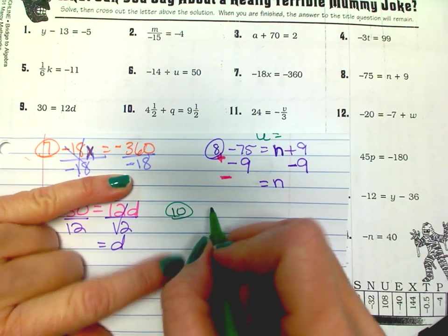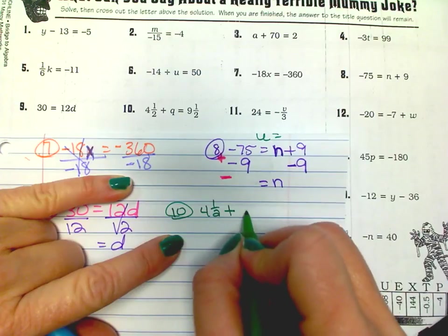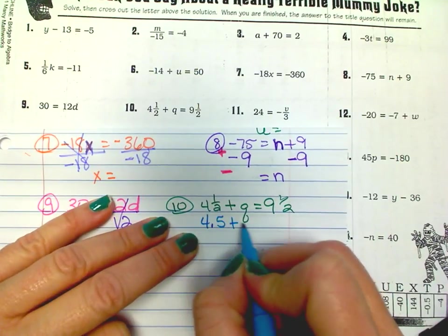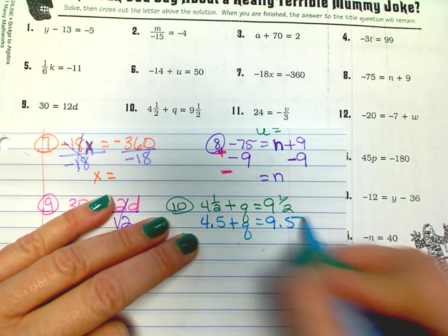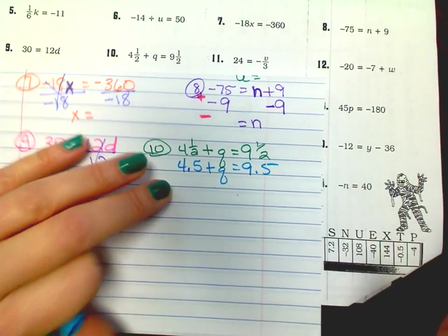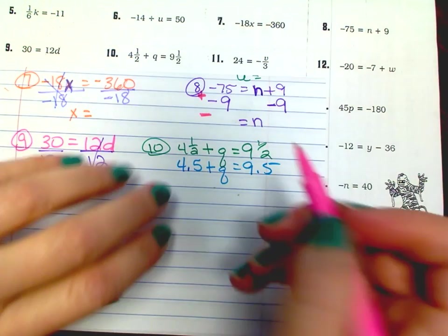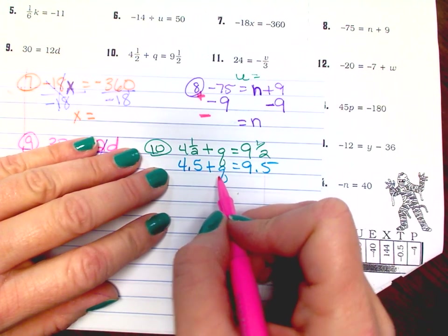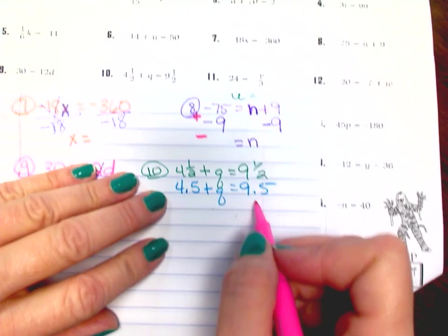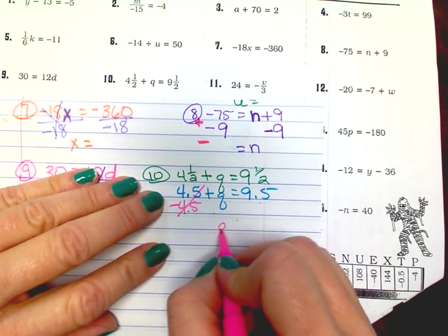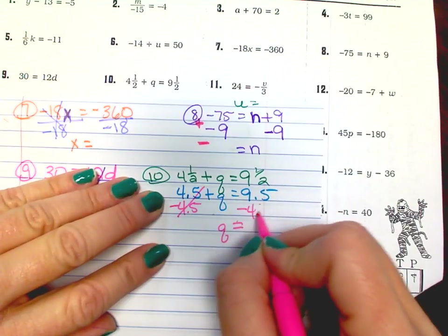Number 10. 4 and 1 half plus q equals 9 and 1 half. On number 10, I changed mine to decimals — so 4.5 plus q equals 9.5. A little bit easier to work with. You can keep them as a fraction; it's whatever your preference is. I want to get q by itself, so I need to get 4.5 to the other side. If it's a positive, I need to subtract because I want this to cancel out. Whatever you do to this side, you must do to the other side.